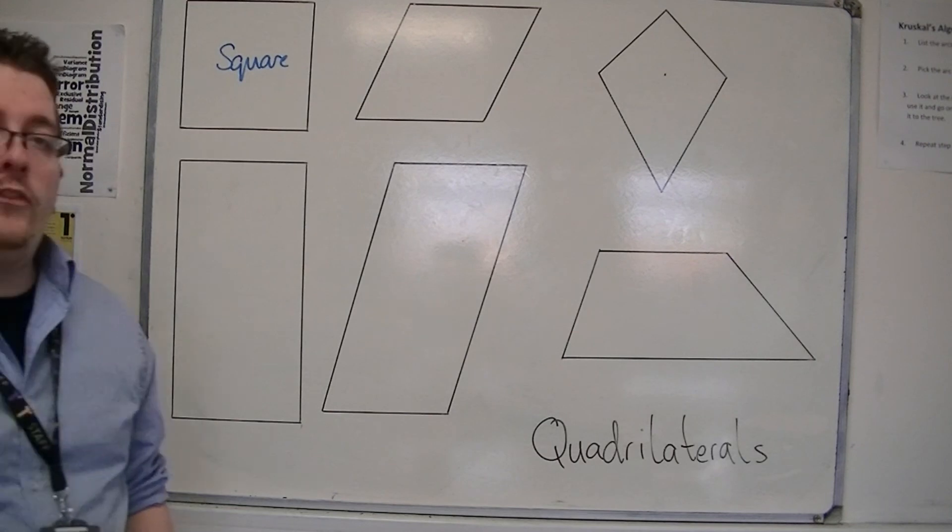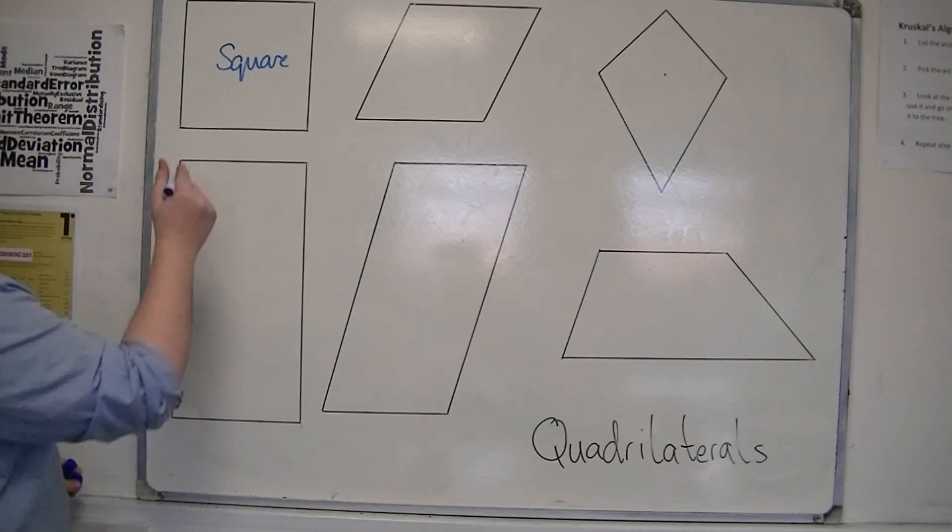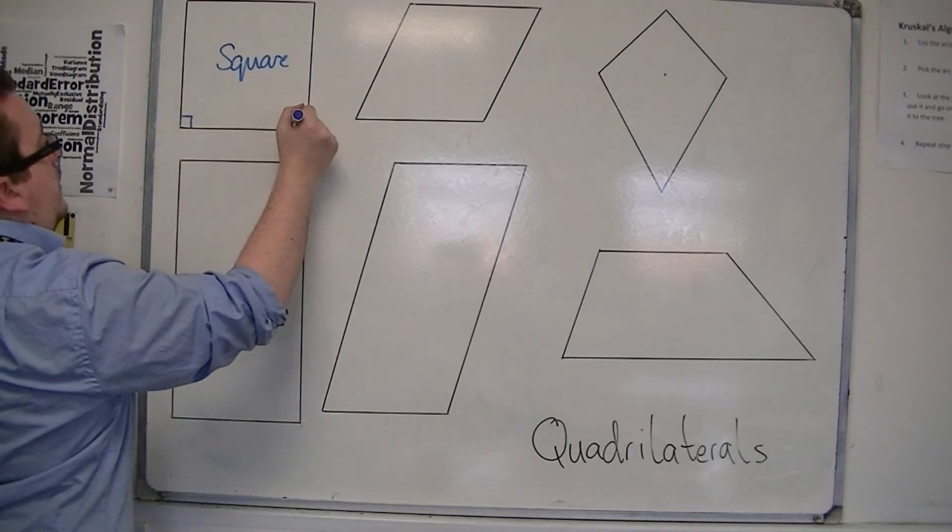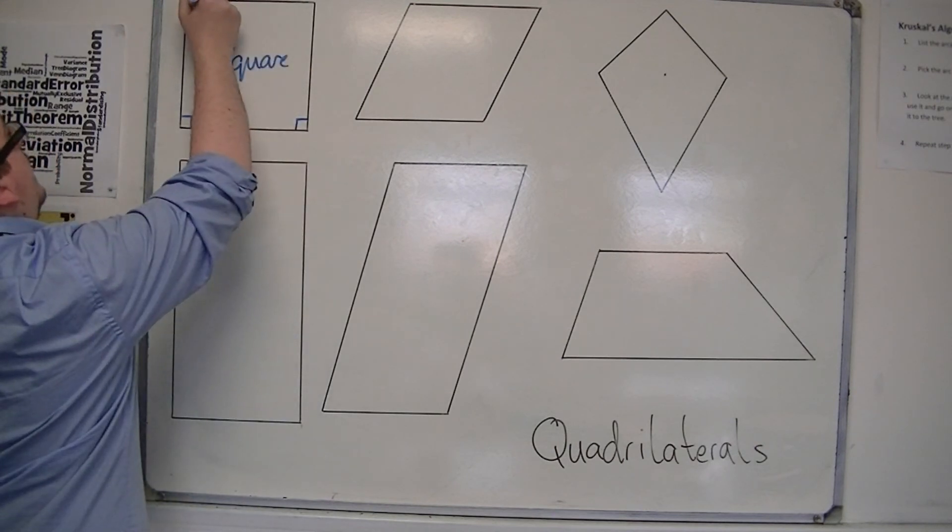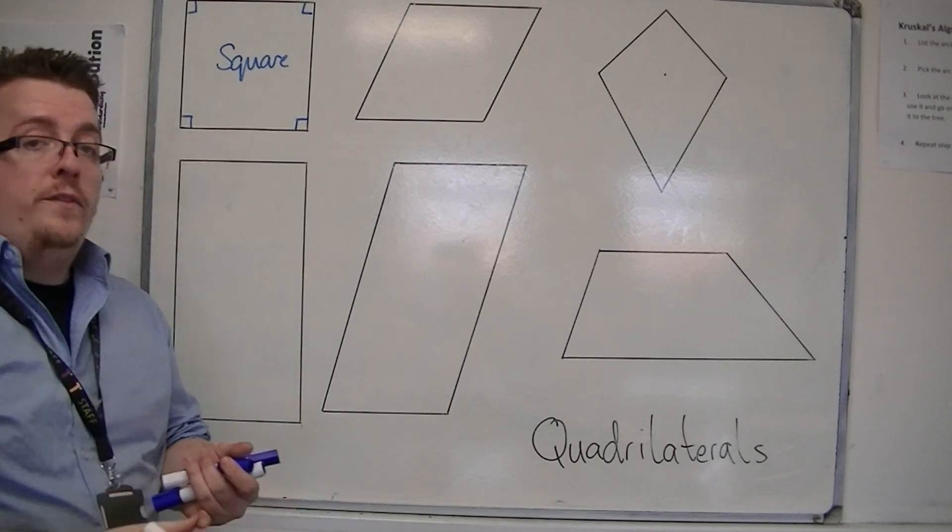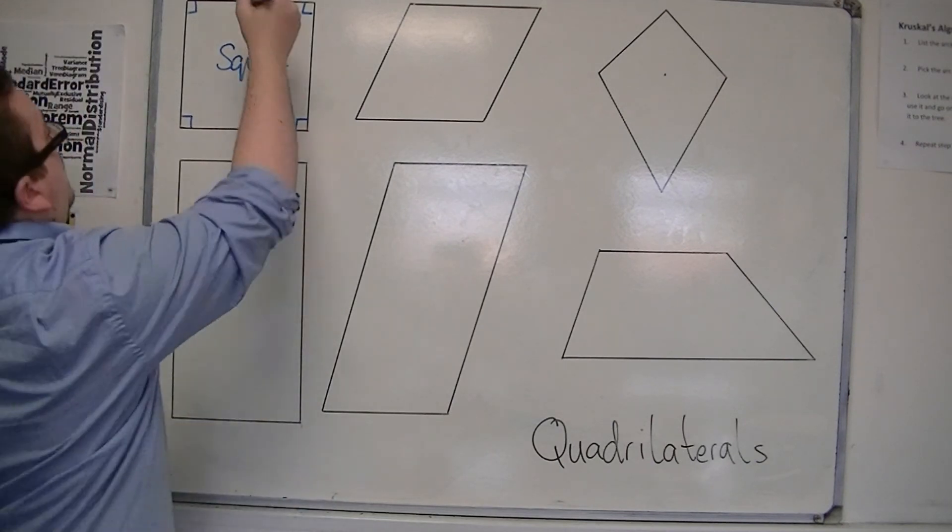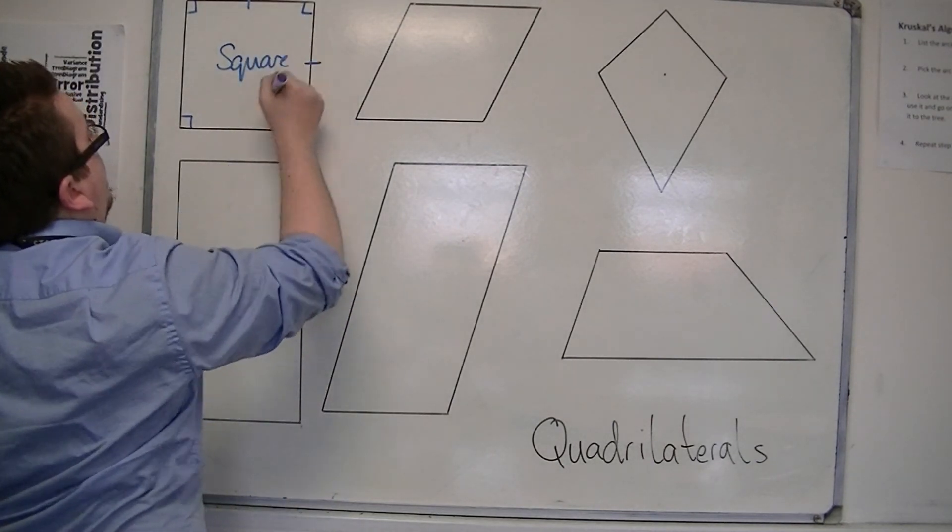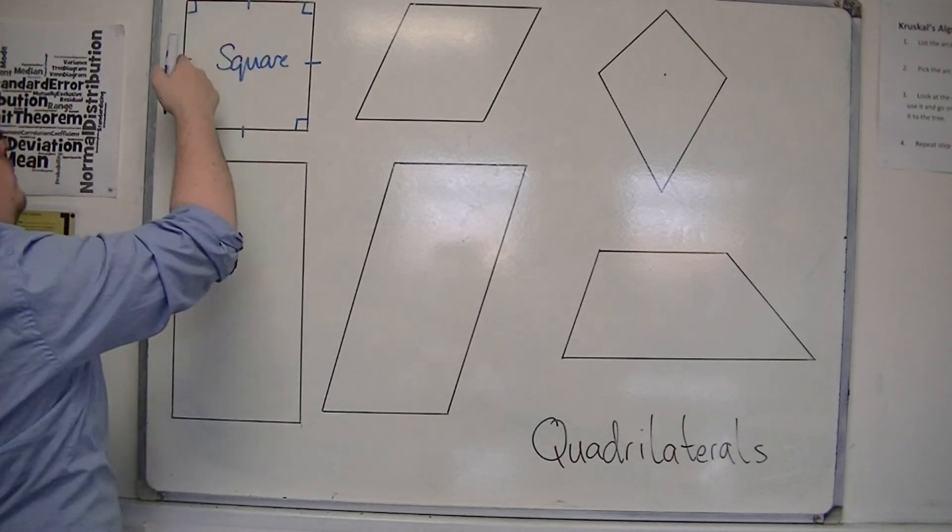Now the square has some certain properties. It has the property of having all of its angles being right angles, all 90 degrees. It also has the property that all of its sides are the same length. So we can represent the same length sides by using one bar.